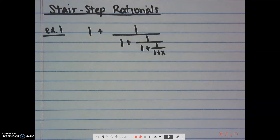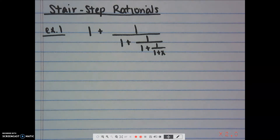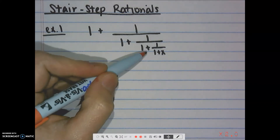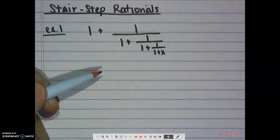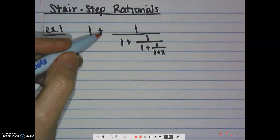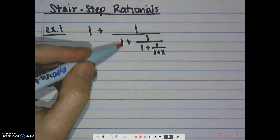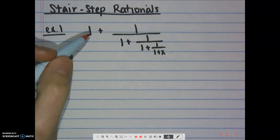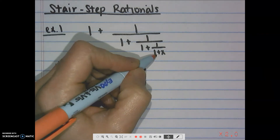Today we're going to be learning about stair-step rationals — that's just something I like to call them because they look like stair steps. Really, these are just complex rationals, fractions within fractions. If we look at this, we have 1 plus 1 divided by 1 plus 1 divided by 1 plus 1 divided by 1 plus x. The biggest thing is keeping track of what you've got, and we're actually going to start all the way at the bottom.